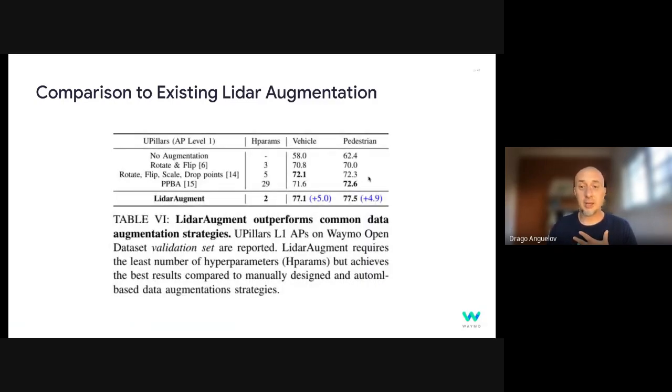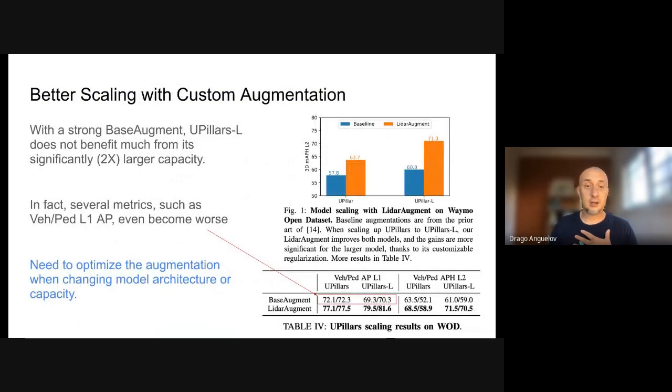And how well does this do? Well, it turns out it does a lot better than PPBA. So almost five points better for this example. It's a U-shaped PointPillars and we push the quality dramatically on the Waymo validation. And there is some other interesting insights. So we experimented with taking the U-shaped PointPillar model and scaling it to at least twice the capacity. And then we take the initial baseline augmentation operations that are usually operations that are popular for U-shaped PointPillar models. And we apply them on the two models. And what happens is, well, that's the blue boxes. So yes, you improve by having a larger model, but the gain is limited and even some metrics can get worse.